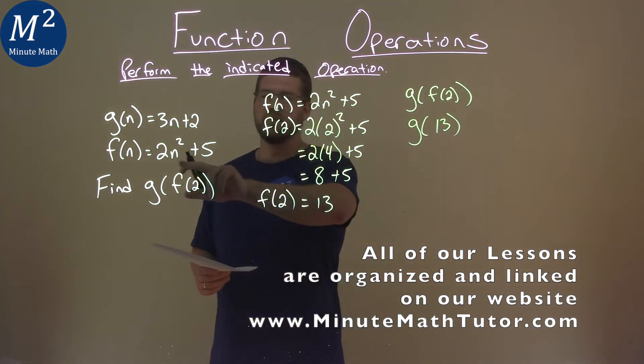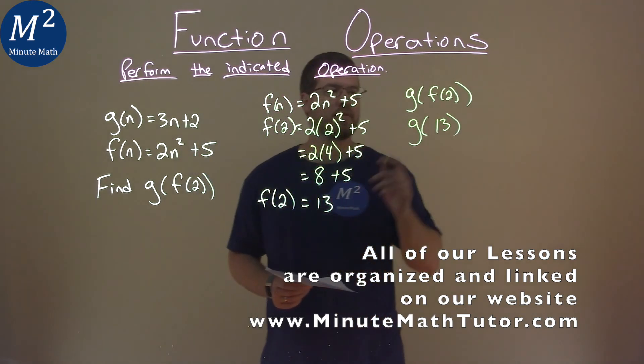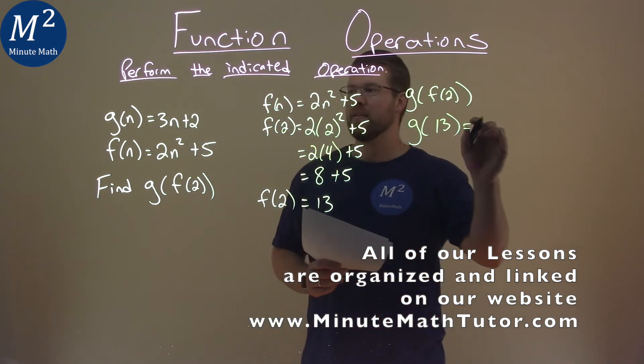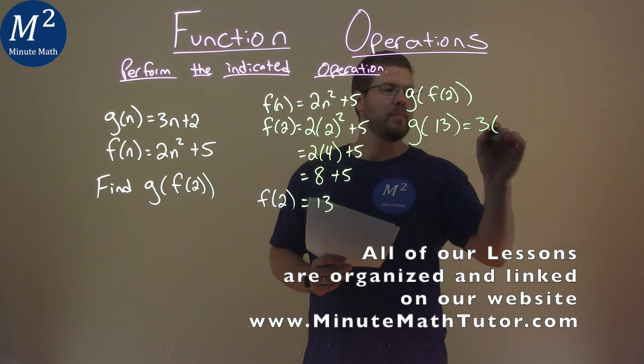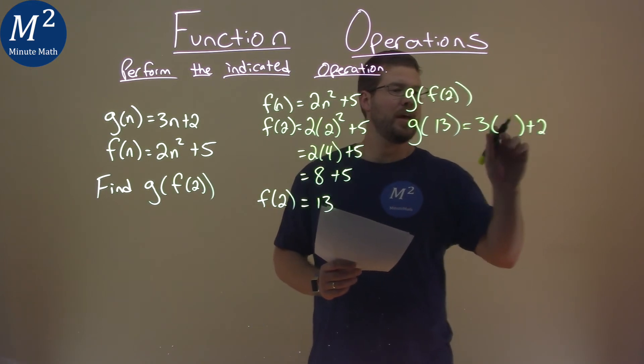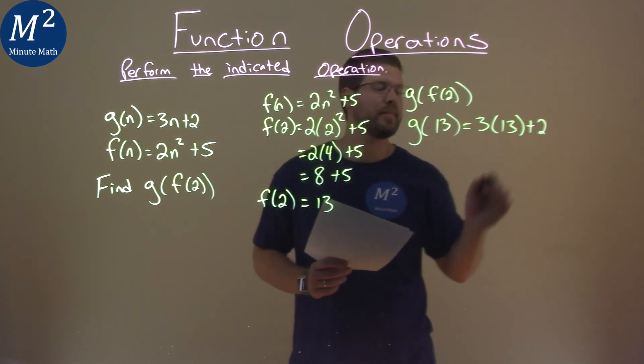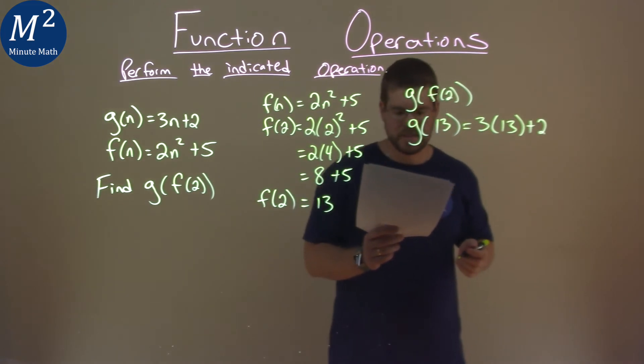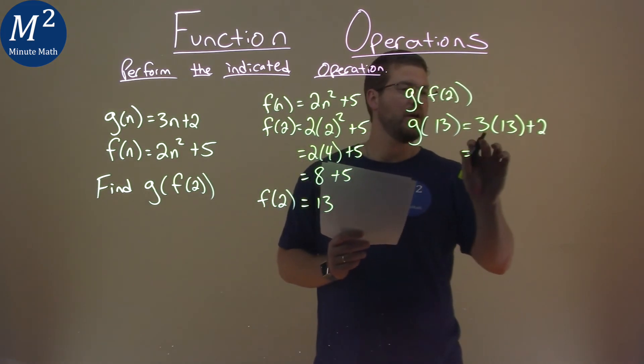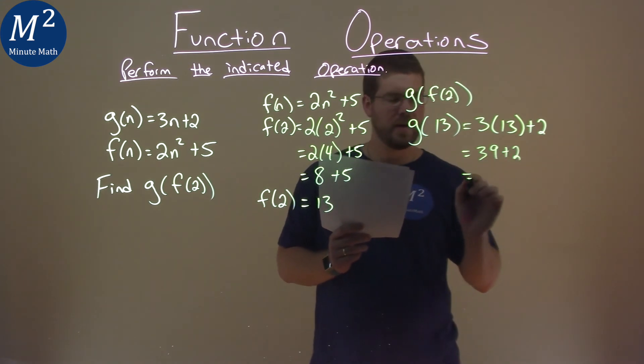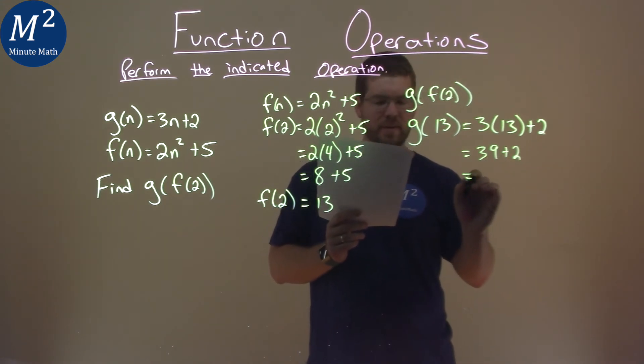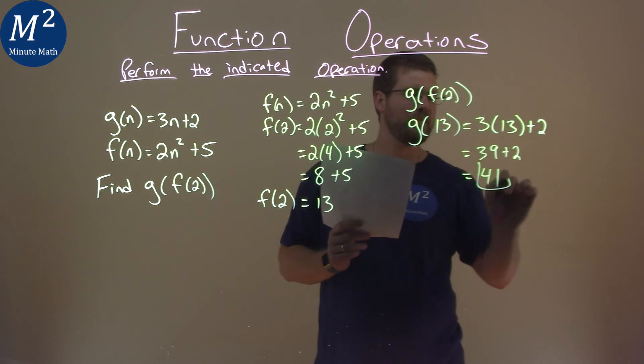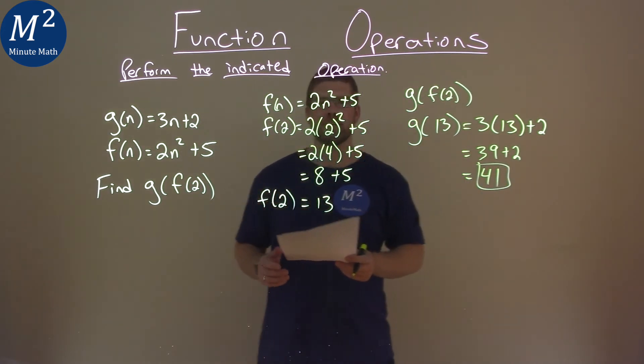g(n) is 3n + 2. So we take 3n + 2 and put 13 in for n. Now we have 3 × 13 + 2. 3 × 13 is 39, plus 2 equals 41. Our final answer is 41.